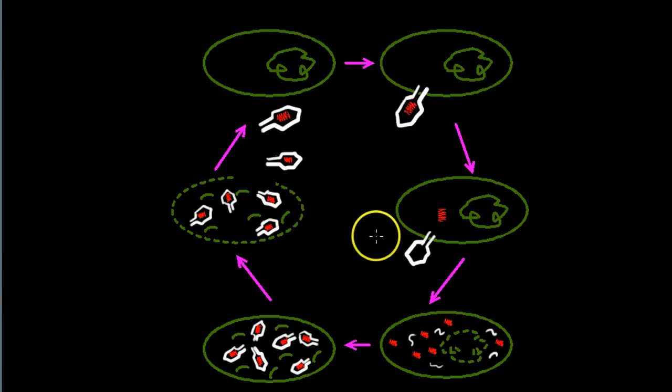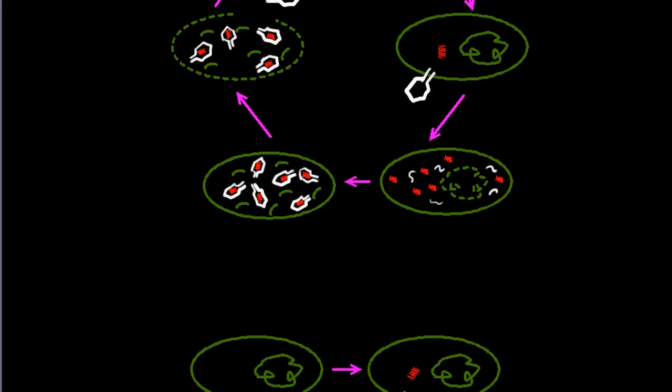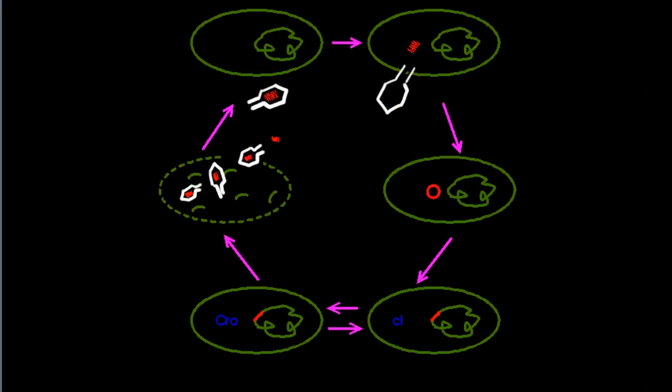This is a brief description of the lytic replication cycle of a lambda phage. The lysogenic cycle is slightly different.